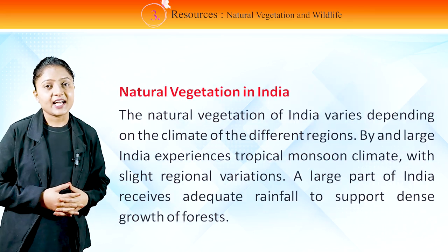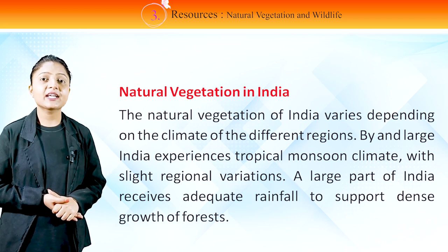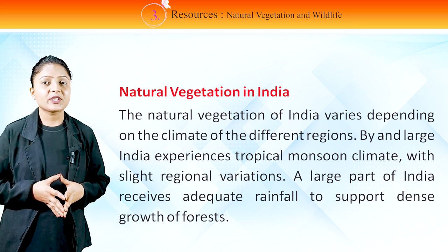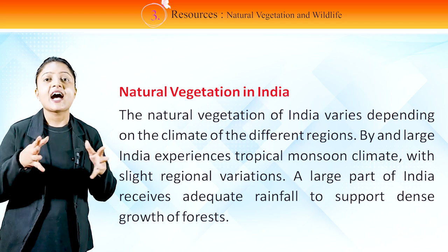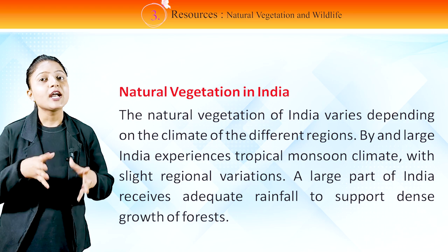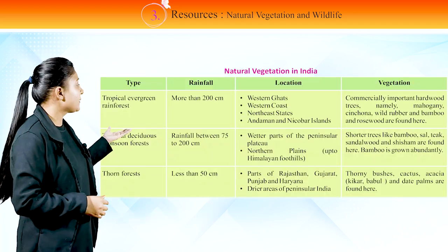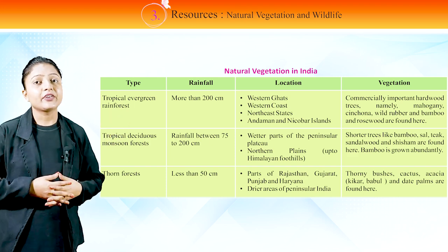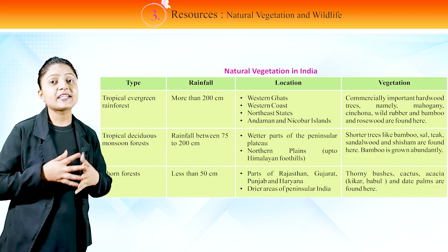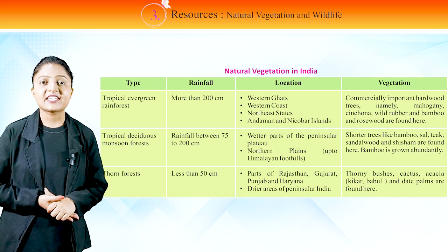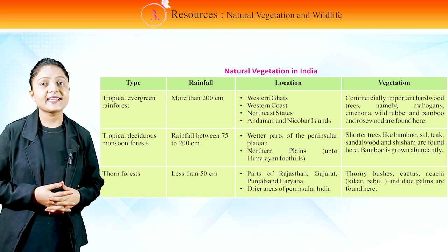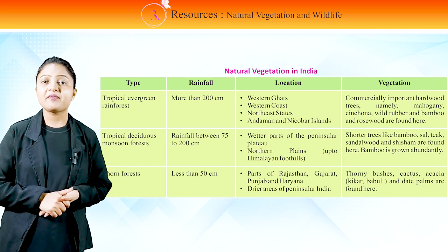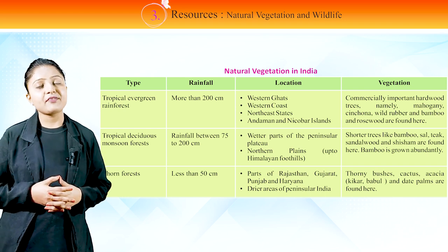The natural vegetation of India varies depending on the climate of the different regions. By and large, India experiences tropical monsoon climate with slight regional variations. A large part of India receives adequate rainfall to support dense growth of forests. In this table, you can see natural vegetation in India. Tropical evergreen rainforest: Rainfall more than 200 cm. Location: Western Ghats, Western Coast, Northeast States, Andaman and Nicobar Islands. Vegetation: Commercially important hardwood trees namely mahogany, cinchona, wild rubber, bamboo and rosewood are found here.